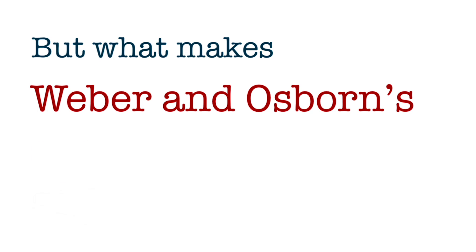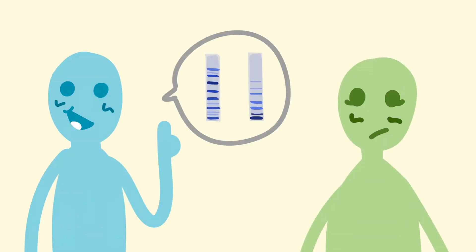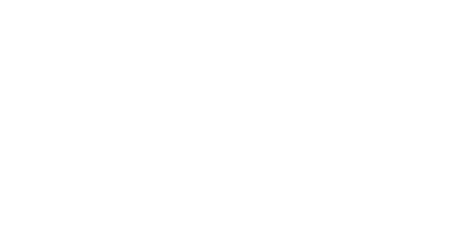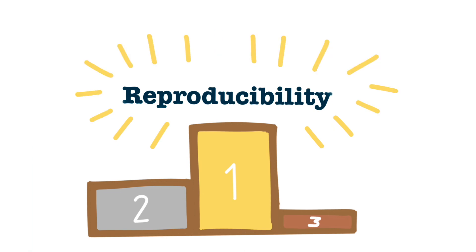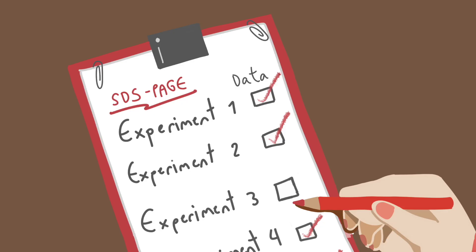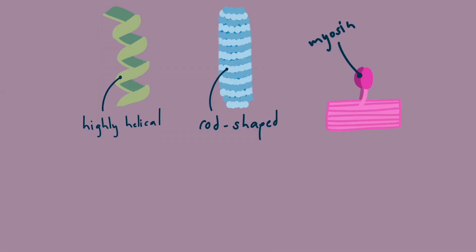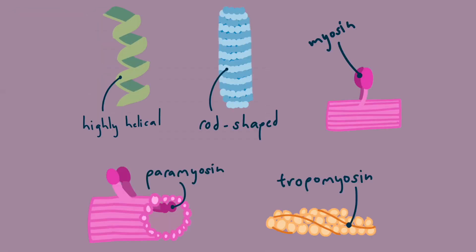But what makes Weber and Osborn's studies so significant? It wasn't because they repeated another researcher's study. Rather, it's the ideas they brought forward. Point 1: Weber and Osborn illustrated that the results produced by SDS-PAGE are highly reproducible. Now, reproducibility is very important because it strengthens and verifies the theory by demonstrating consistency in the data produced, even if the experiment was to be repeated by other researchers.